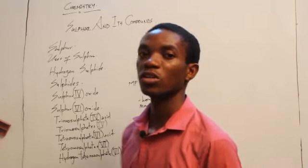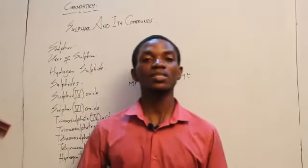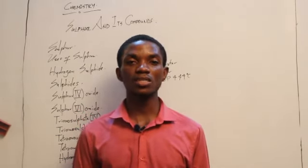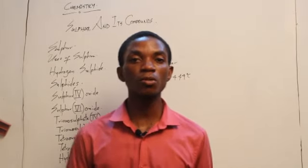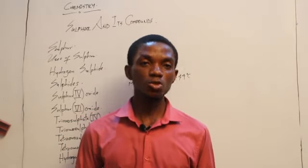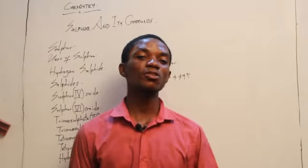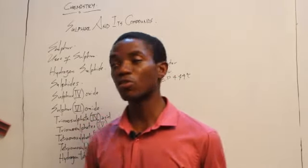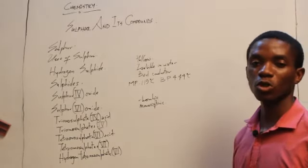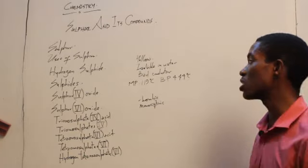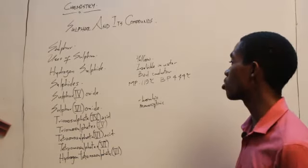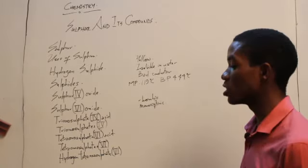Let's begin with sulfur. What is sulfur? Sulfur is one of the oldest known substances, one of the oldest known elements. It exists in its natural state as a solid with a yellow coloration. It can be found as deposits about 200 meters below the earth's crust in different locations around the world. Physical properties of sulfur include the fact that it is insoluble in water, it is a yellow solid, a very bad conductor of electricity, with a melting point of about 119 degrees Celsius and a boiling point of about 444 degrees Celsius.